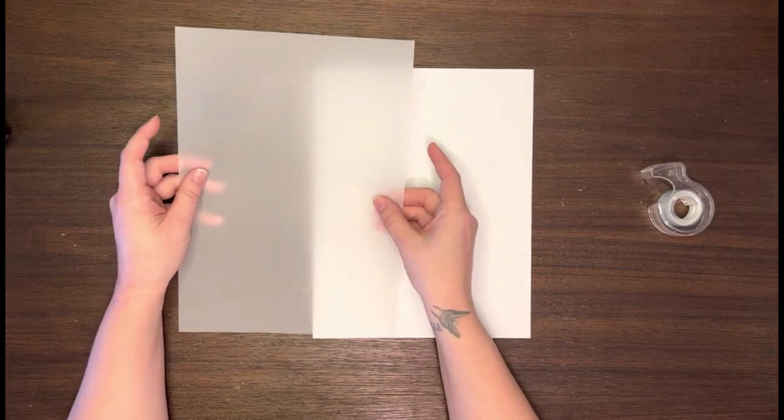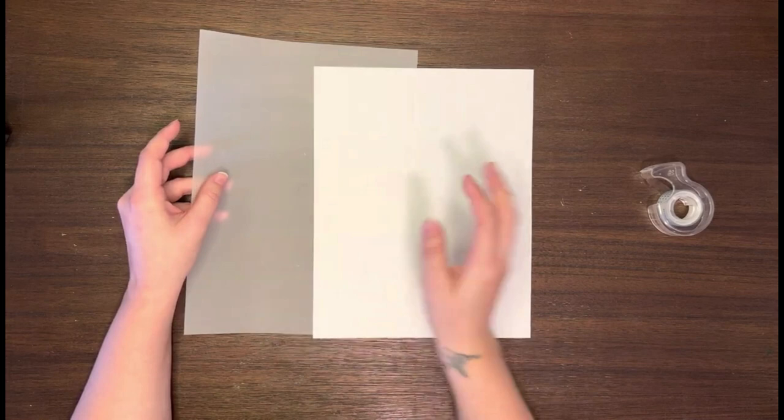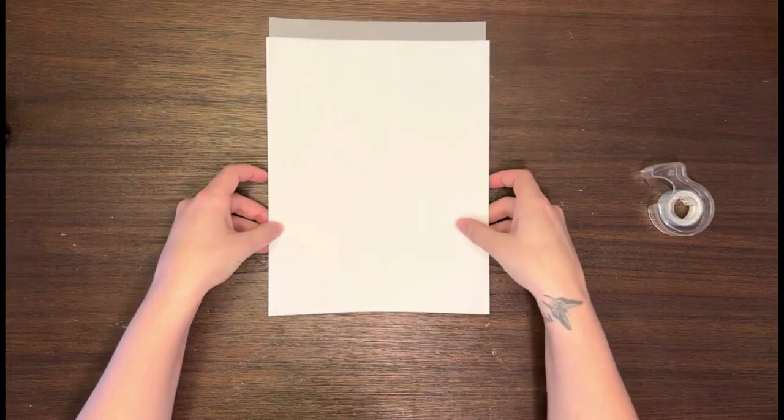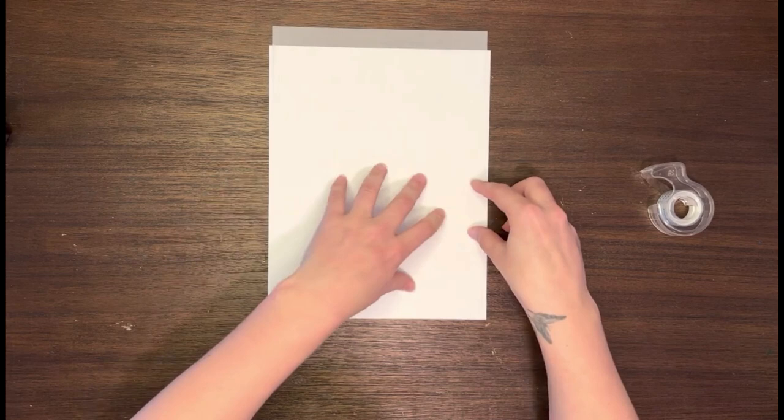And what you want to make sure of again is that your film is the correct way. You want the side that you're going to be printing on upwards so the shiny side is always down because you're not printing on that. So go ahead and just overlap our film and our paper and I like to just make sure they're really nice edge to edge just like that and as centered as possible.